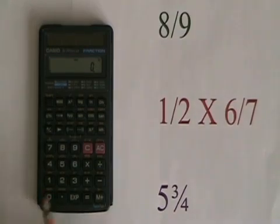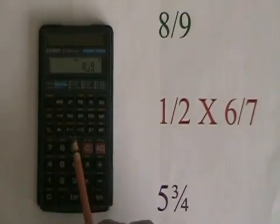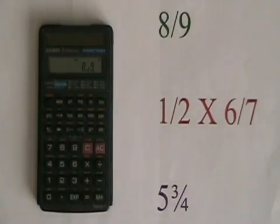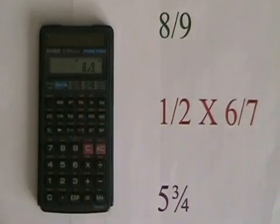We do this by pressing 8, ABC, 9. The ABC is the fraction key, and pressing 8, fraction key, 9 enters the fraction 8 ninths, and this is what it looks like in the display of the calculator.